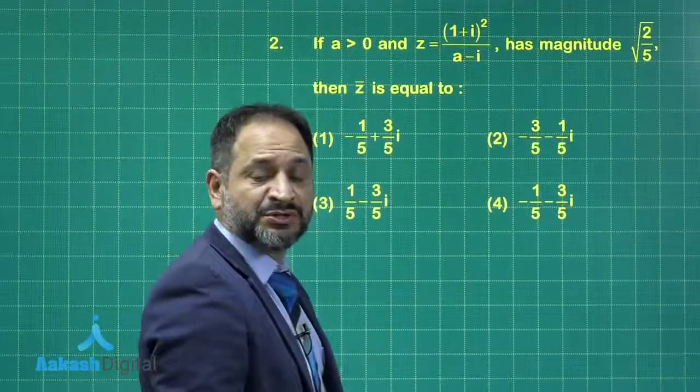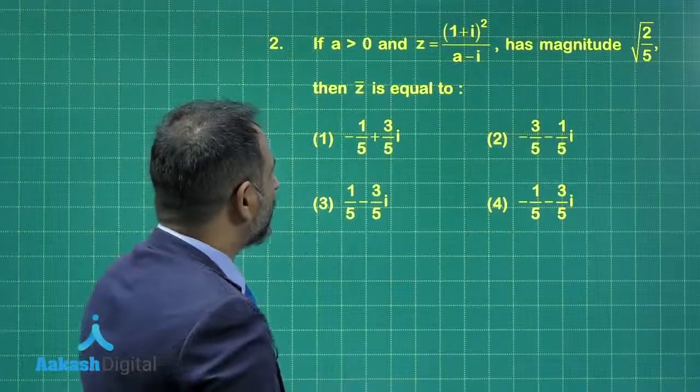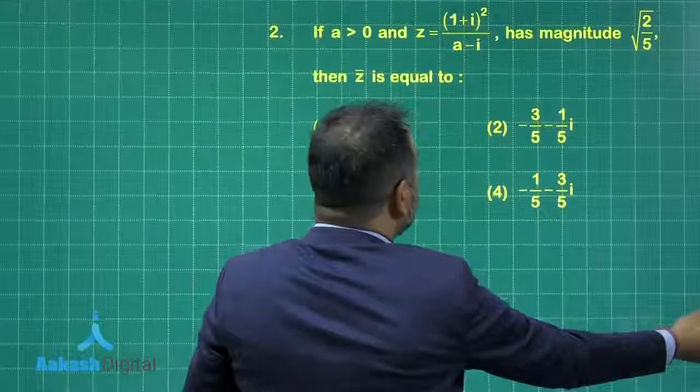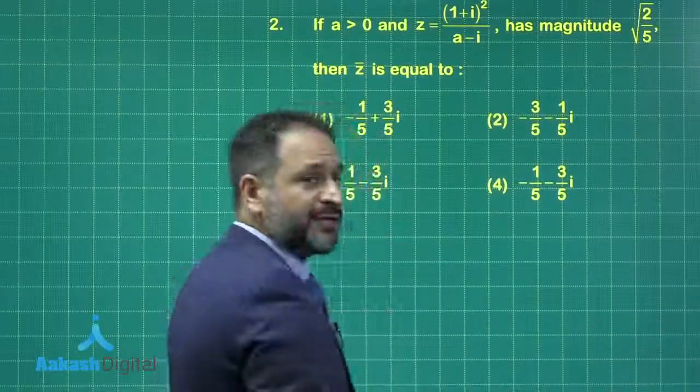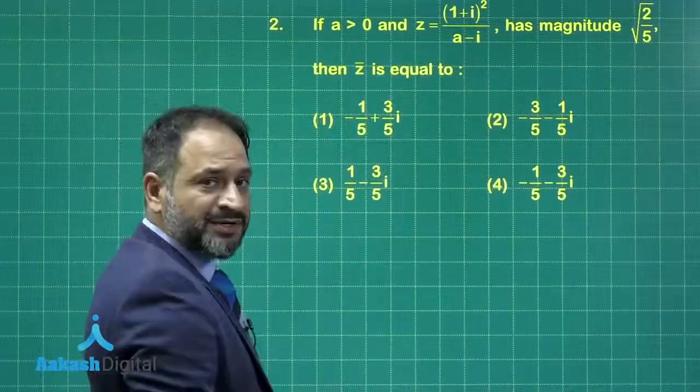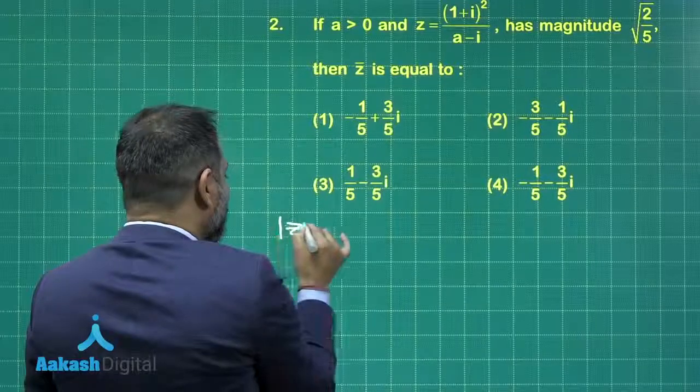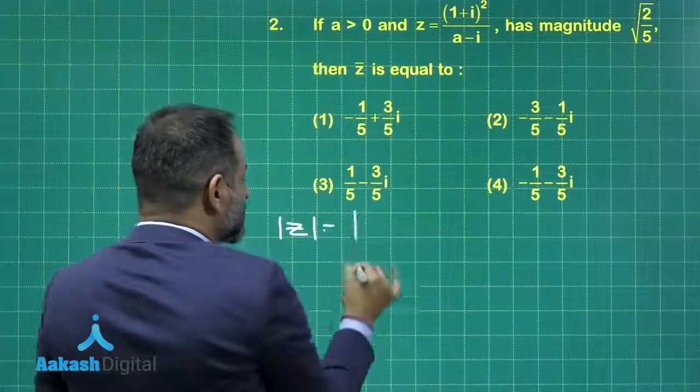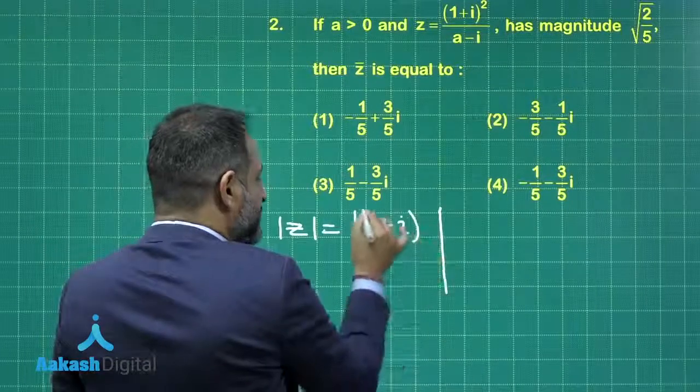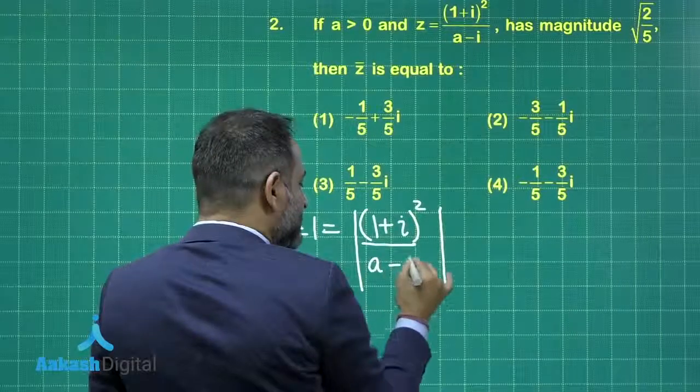You know a very important property when two complex numbers are equal, then their modulus is also equal as well. So what I am going to do here, I am going to take the modulus on both the sides.